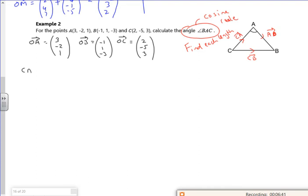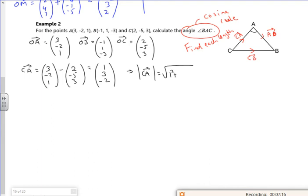So I'm going to do CA. So I know that's going to be A take C. So (3, -2, 1) minus (2, -5, 3). So I know that CA is going to be (1, 3, -2). And you could have the signs reversed. But now what I want is its length. So the length of it, I'm just going to do it here at the side. The length of CA will be Pythagoras of 1 squared, 3 squared, -2 squared. So that's 1, 9, 4, root 14. There.